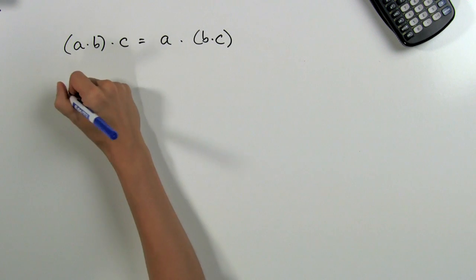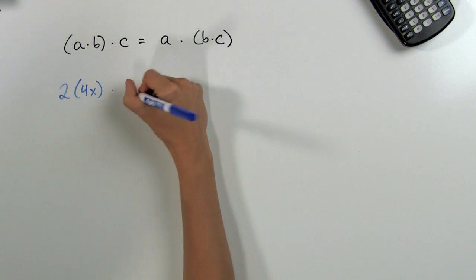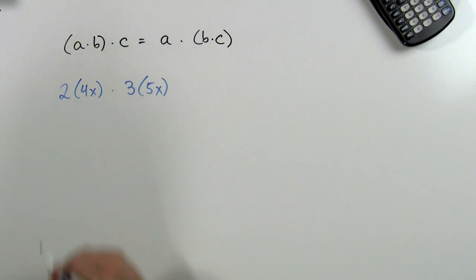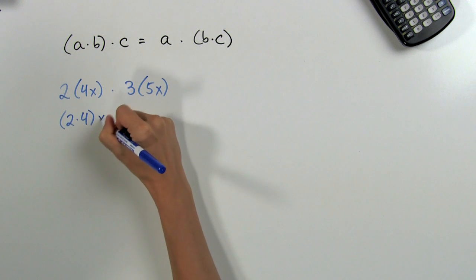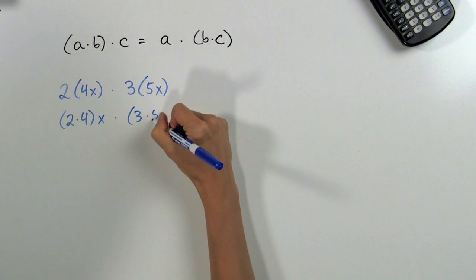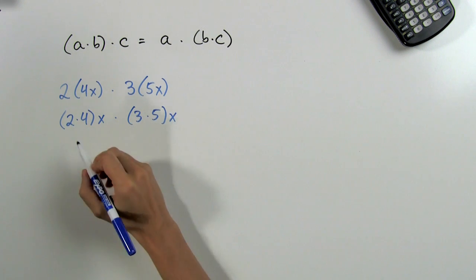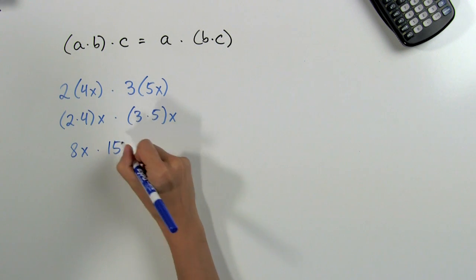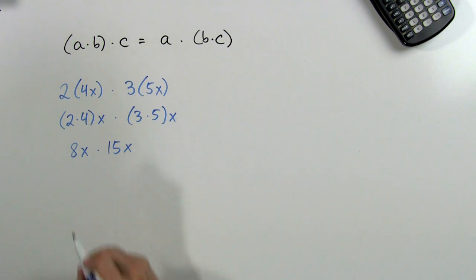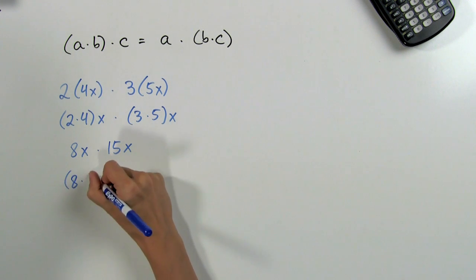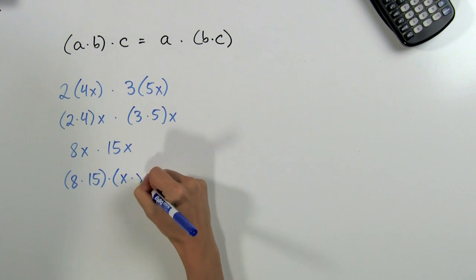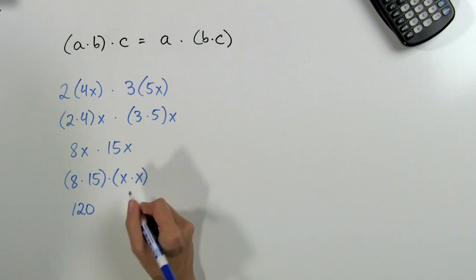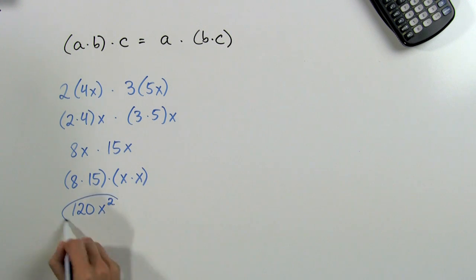Suppose we need to simplify 2 × 4x × 3 × 5x. Using the associative property, we can regroup these numbers. We can multiply the coefficients and get 8x × 15x. We can use the associative property again to regroup and get 8 × 15 × x × x. We know that 8 × 15 = 120, and x × x = x squared, so that gives us our answer: 120x².